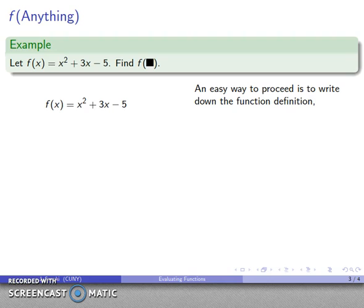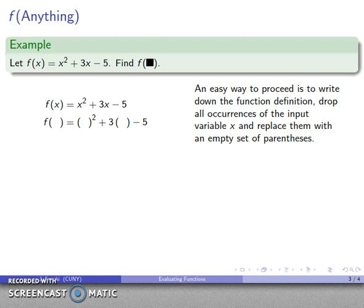And then what we'll do next is we'll just drop out every occurrence of our variable, and we'll replace them with an empty set of parentheses. Paper is cheap, don't try to save space. f of empty set of parentheses equals empty set of parentheses squared plus 3 times empty set of parentheses minus 5. And what I have now, you can think about this as a template for how I'm going to evaluate my function.